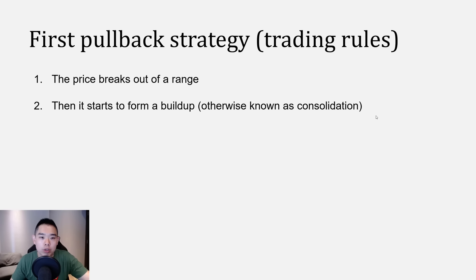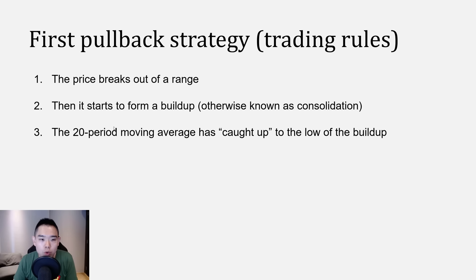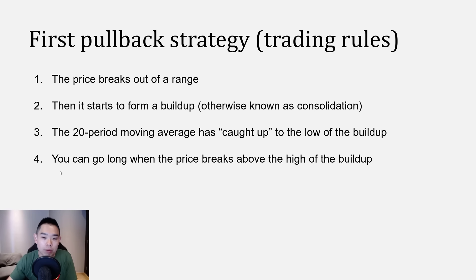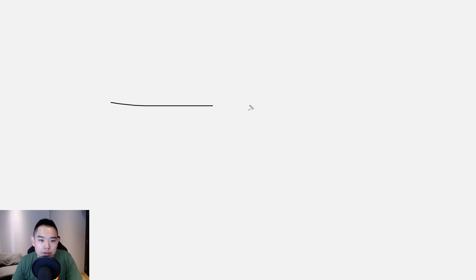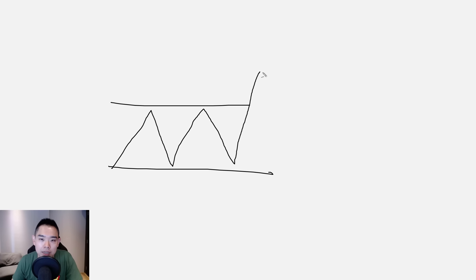The first pullback trading strategy: first, you're looking for the price to break out of a range. Then you're looking for it to form a buildup — otherwise known as a consolidation. Once you have a buildup, you also want the 20-period moving average to catch up to the low of the buildup. You can go long when the price breaks above the high of the buildup, and your stop loss goes a distance below the swing low of the buildup. When you buy the breakout point directly, there's no logical place to set your stop loss and you'll likely get stopped out on any pullback.